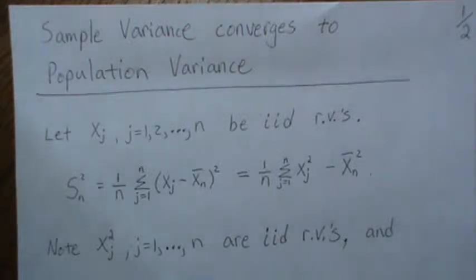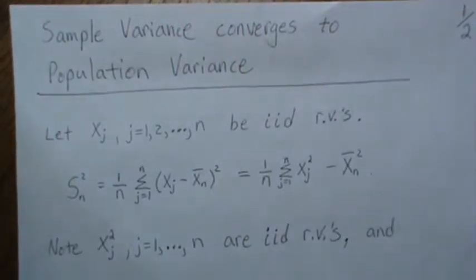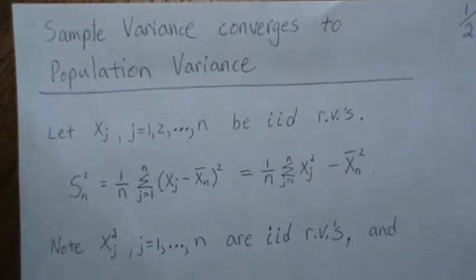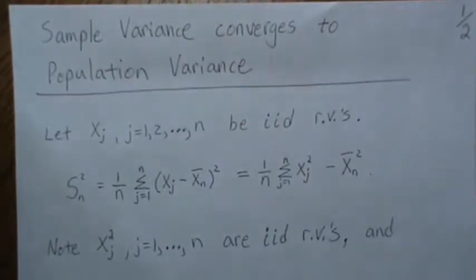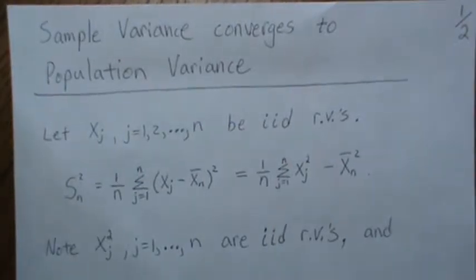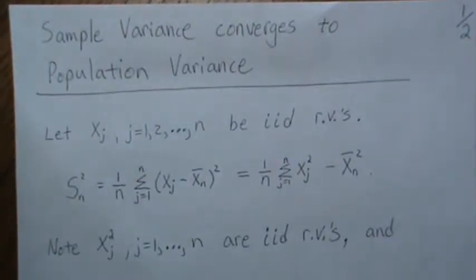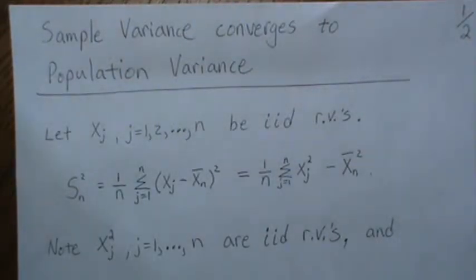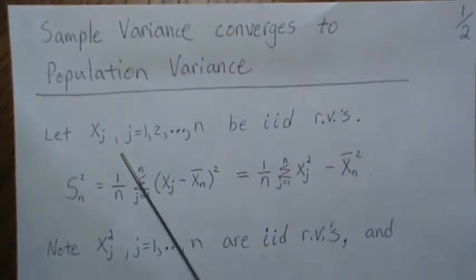Hello, this is the 11th video in a mini series called 'Basic Limit Theorems.' Here we're going to show that the sample variance converges to the population variance, and we're also going to end with a result that uses Slutsky's theorem, which we proved in the last video, video 10 in this series.